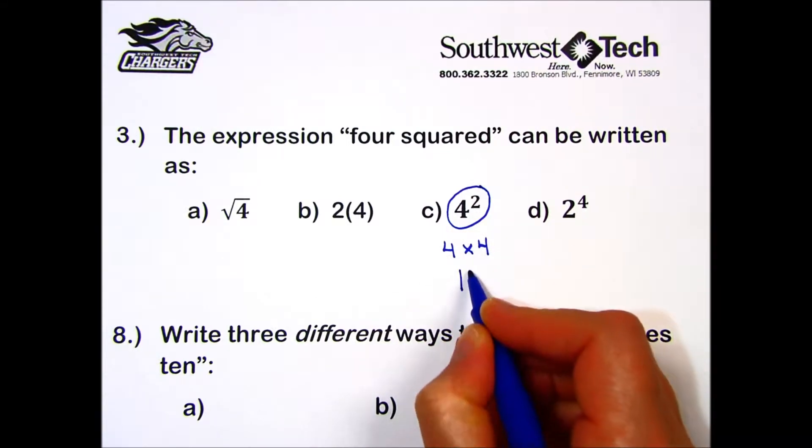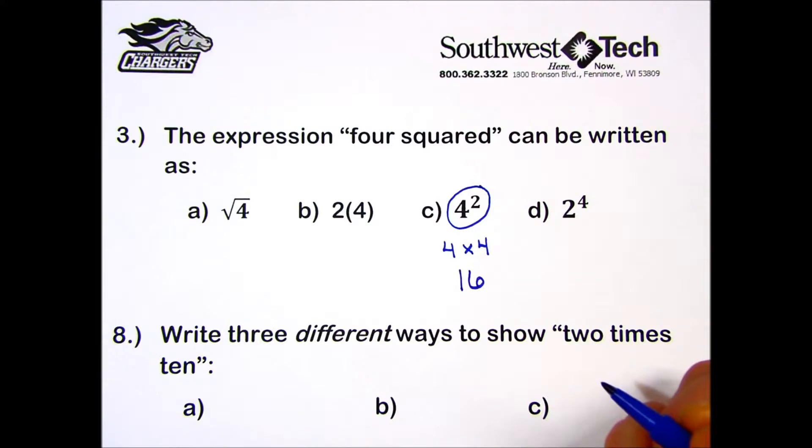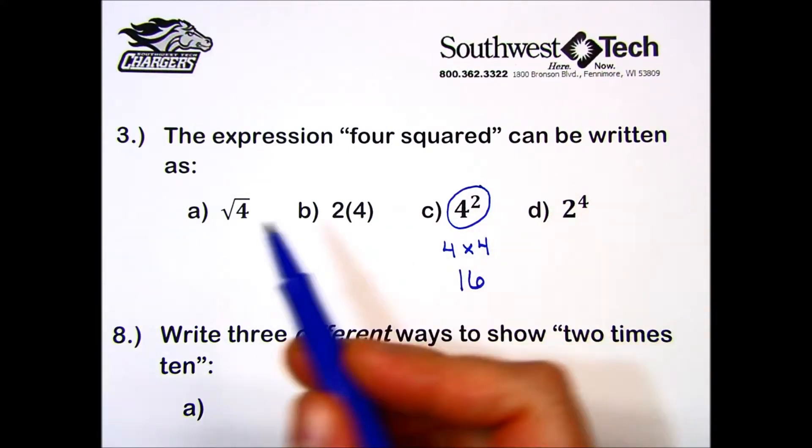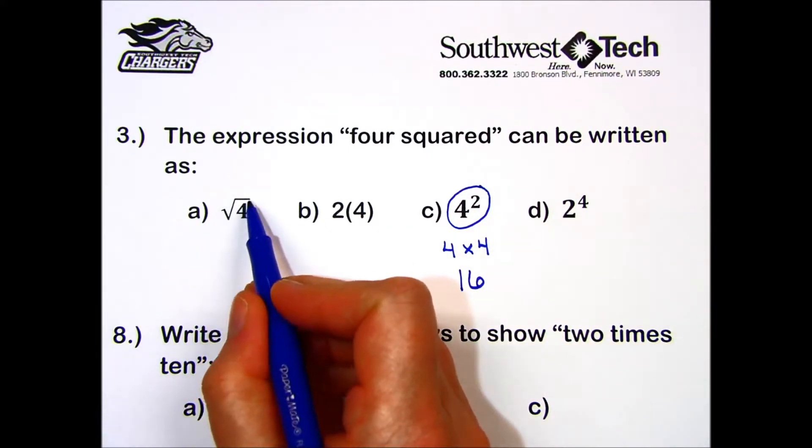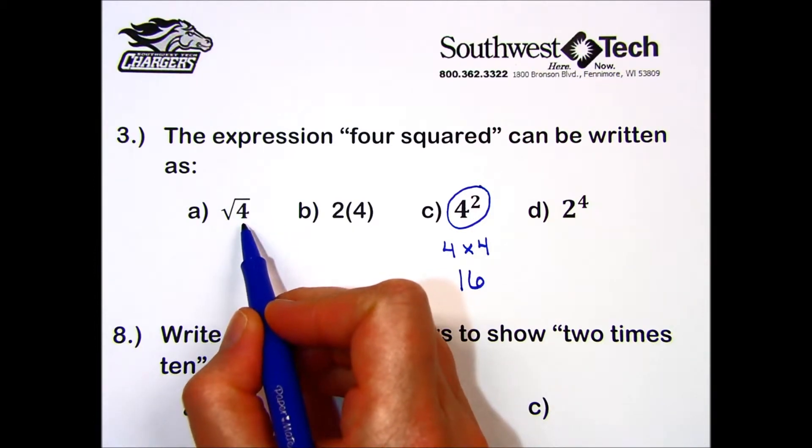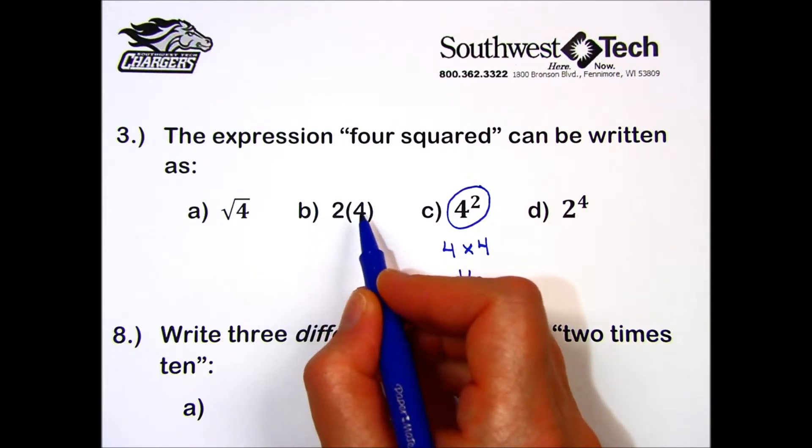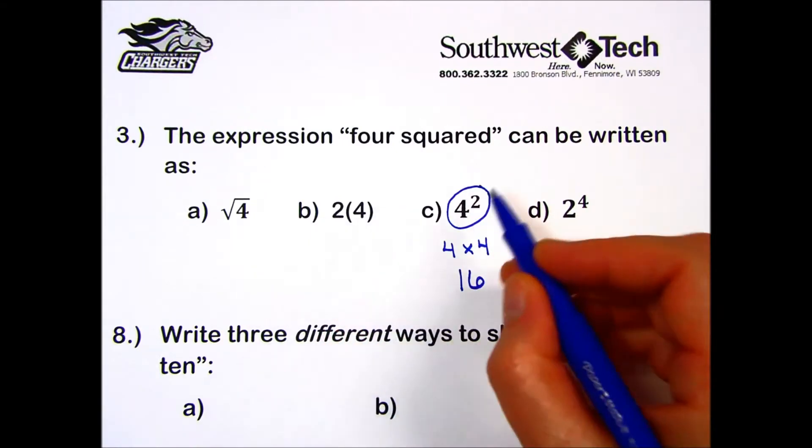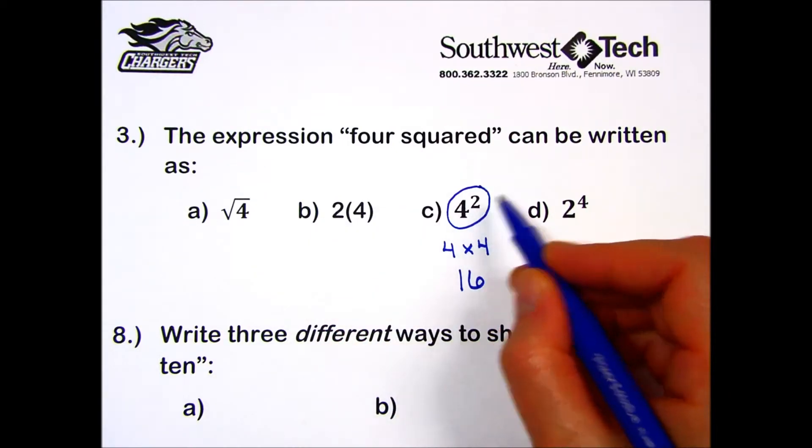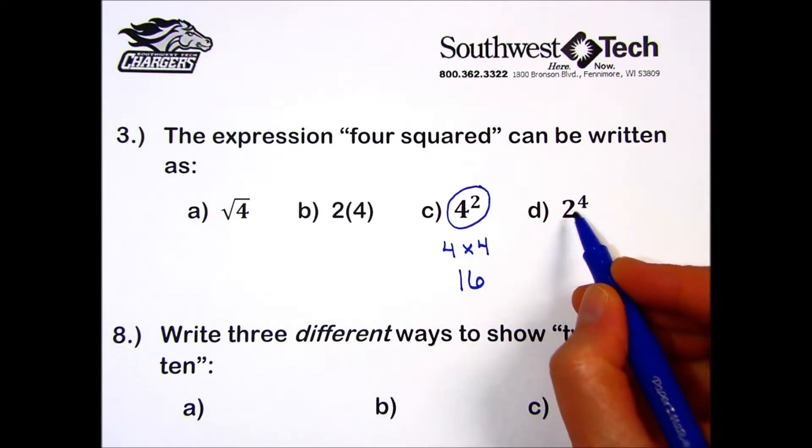Let's see how we would pronounce the other choices. This is the square root of four. Here I do not see any symbol between a number and a parentheses, so we assume it's multiplication, and I would say two times four. Again, this is four squared, and for D we have two to the fourth power.